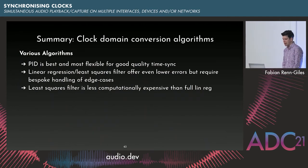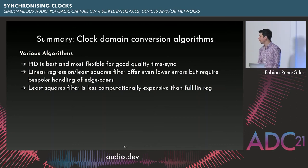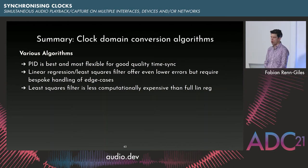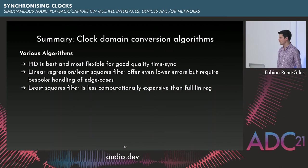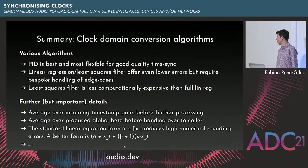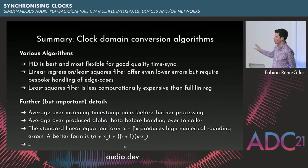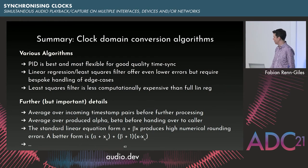As a summary: use a PID if you need simple, good-quality time sync without worrying about outlier types — it works with a broad noise profile. Use linear regression or recursive least squares if you need the absolute best precision; the least squares filter is more computationally efficient than linear regression. There are many details I glossed over that you'll need to study if implementing this yourself.